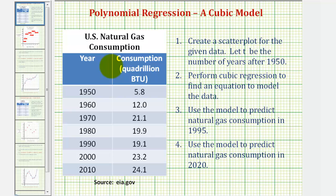Welcome to an example of cubic regression on the TI-84 graphing calculator. Here we're given data on the US natural gas consumption where we have paired data where we have the year and the consumption in quadrillion BTUs.